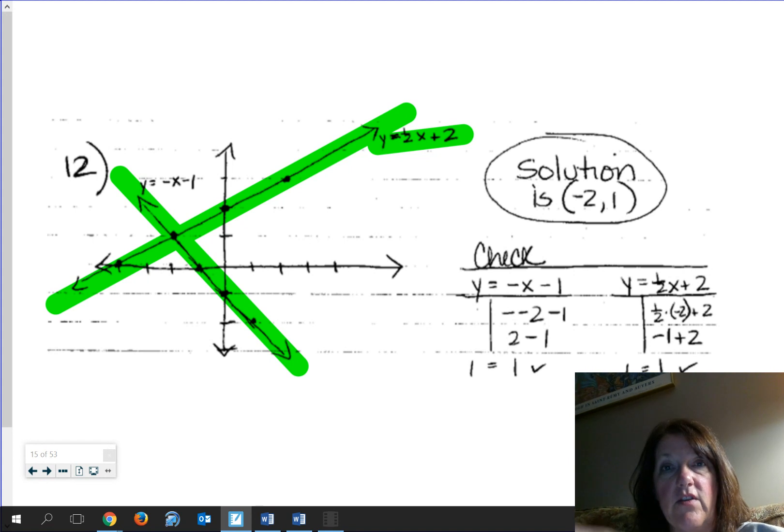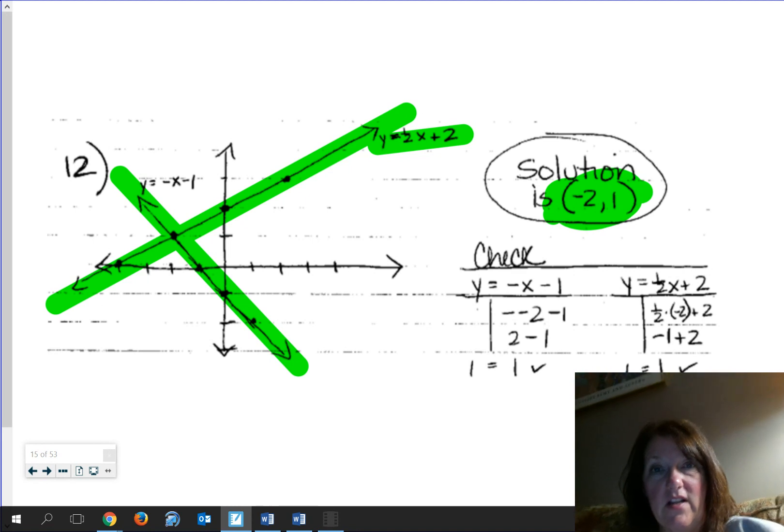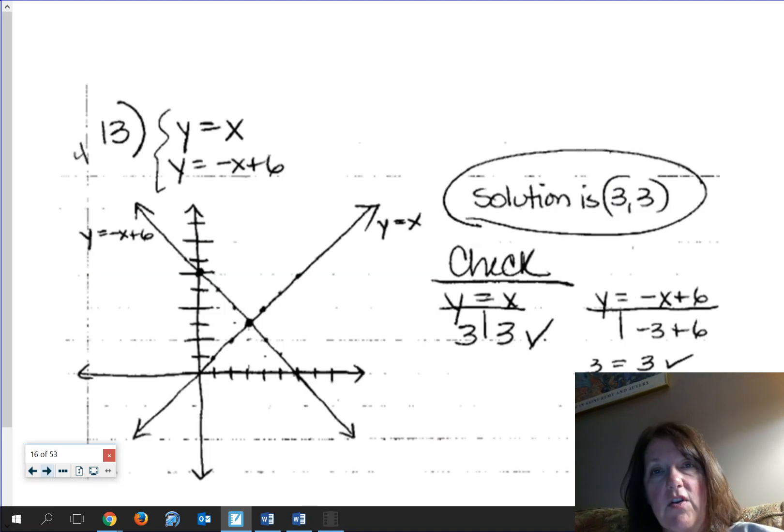It's over here, quadrant 2 at (-2, 1). And when you go ahead and check it algebraically, by substituting the values in, it works in each of the equations. All right, let's look at some of the other graphs. There's 13.